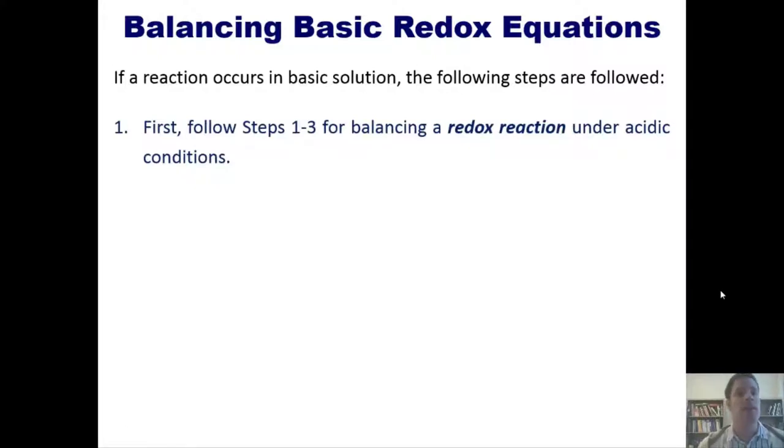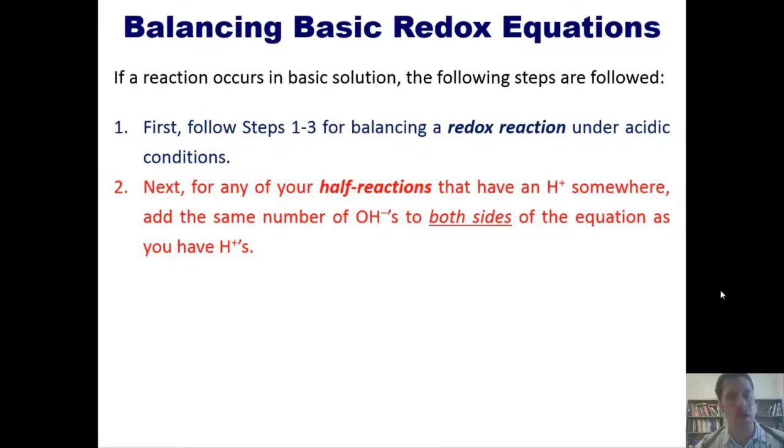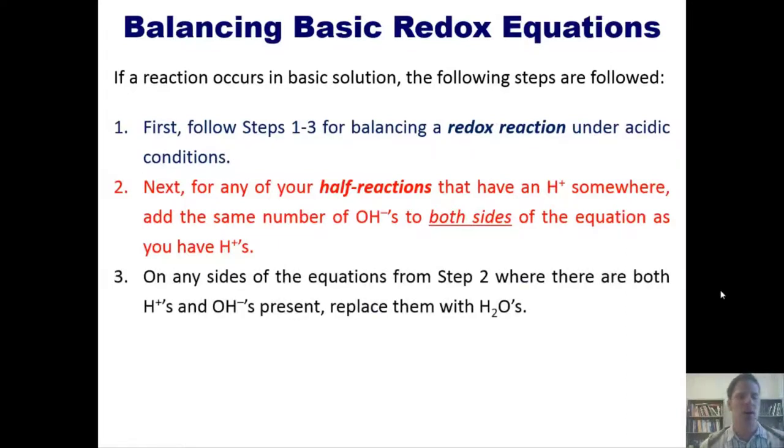Second, for any of your half-reactions that have an H+ somewhere, add the same number of OH- to both sides of the equation as you have H+. Third, on any sides of the equations from step two where there are both H+ and OH- present, just replace them or combine them together to turn them into H2O.